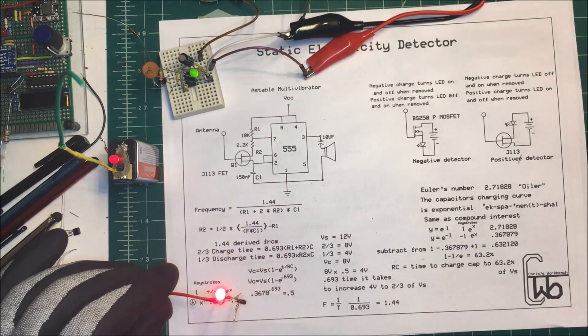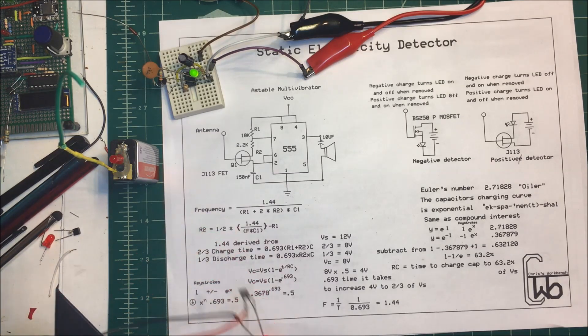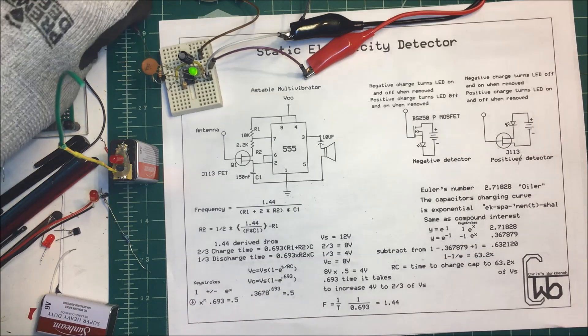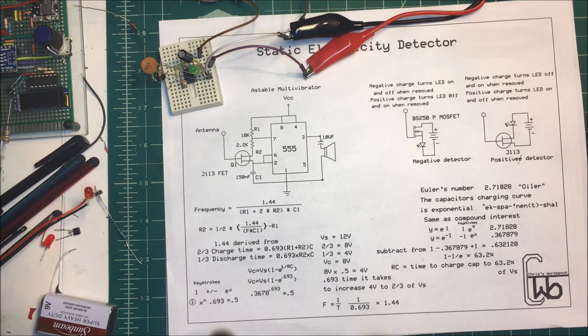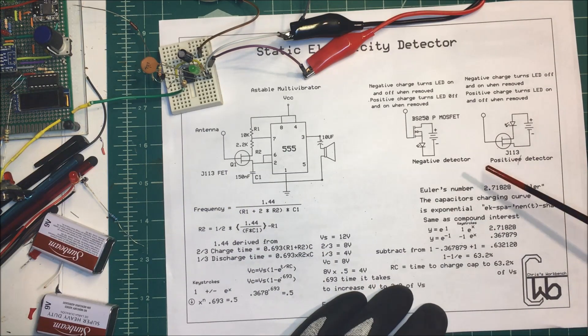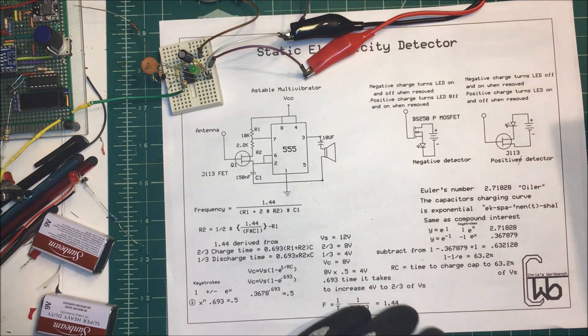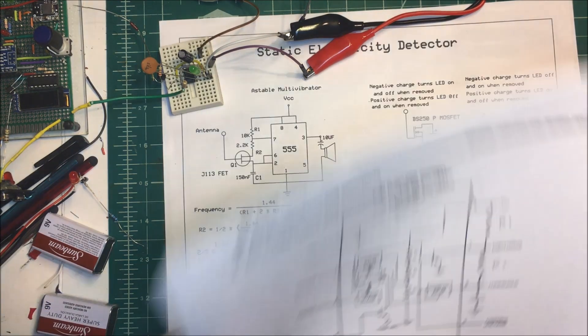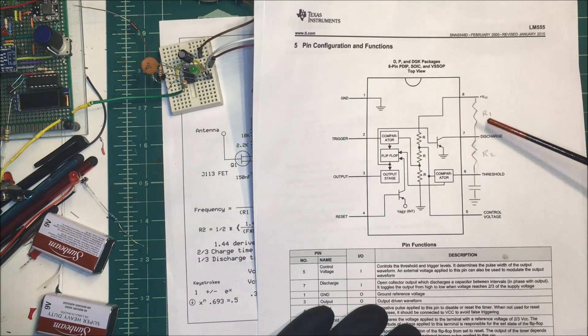There we go, that one's working, so those all work. I'll take that off, let's get rid of that noise there too. Okay, now on this 555 timer here I'm using it as an astable multivibrator and here's a spec sheet here and we just have R1 and R2 on here.